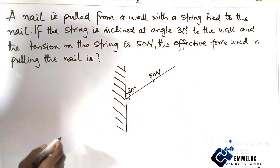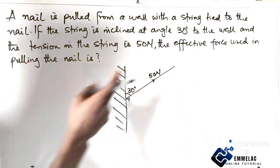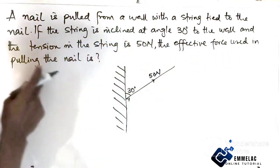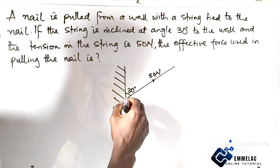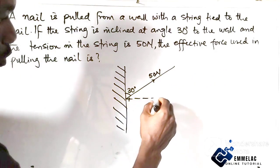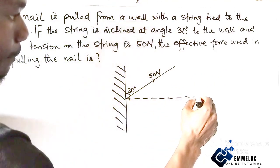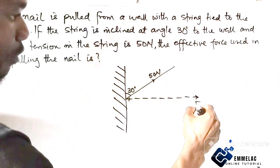The effective force used in pulling the nail is... To pull this nail, we just need to resolve the force horizontally. This will be the force. Take note, this is the tension on the string.